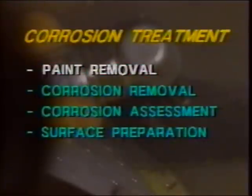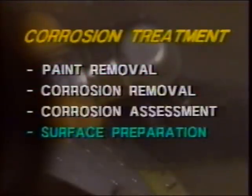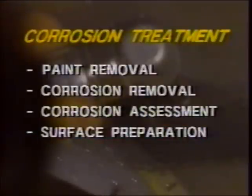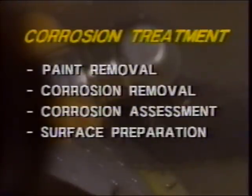To summarize part three, we addressed every aspect of treating or repairing corroded metal. We discussed paint removal, removal of the corrosion product, corrosion damage assessment and rework limits, and surface preparation prior to painting. Each of the steps in the repair process must be done in turn or the repair will not be airworthy.